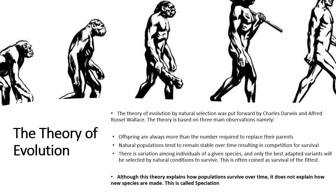So let's look into evolution — this will be the last chapter for 17. We know about the theory of evolution, which was put forward by Charles Darwin and Alfred Wallace, and this theory was based on three observations.